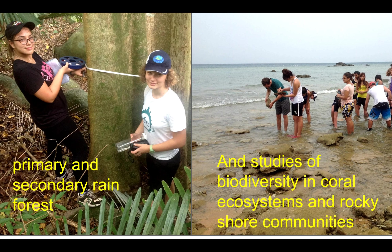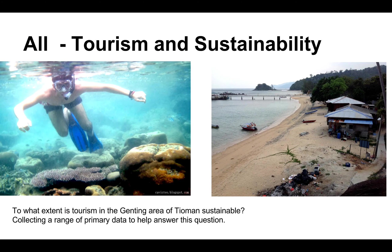Another thing you've done in the past is looking at primary and secondary rainforests. That one was looking at a coastal ecosystem — this one here is looking at a transect on a rocky shore, looking at zonation patterns. That's an ESS and biology topic. For everyone though, one of the things to consider is just how sustainable tourism is there. That's very much geography and ESS specific, but certainly something biologists need to be aware of as well.